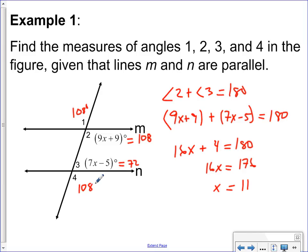So what would one be? This has to be 108 because vertical. And what would four have to be? 108. There's so many reasons. Give me one of them. Three and four are supplementary. Give me another one. Two and four are identical. Two and four are the same as well because they're what kind of angles? Corresponding.